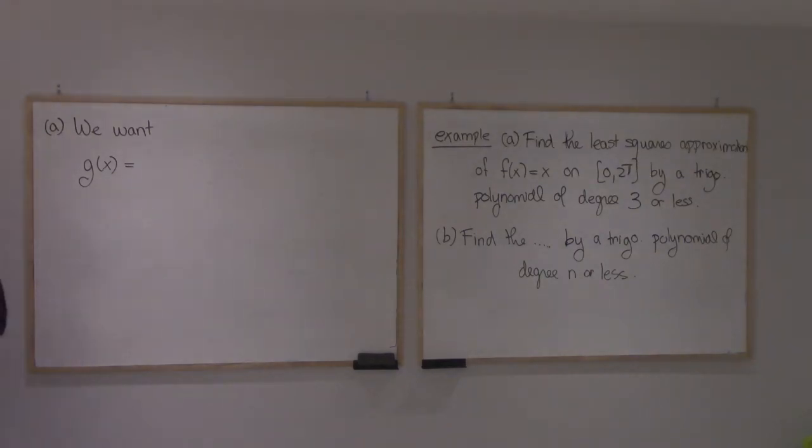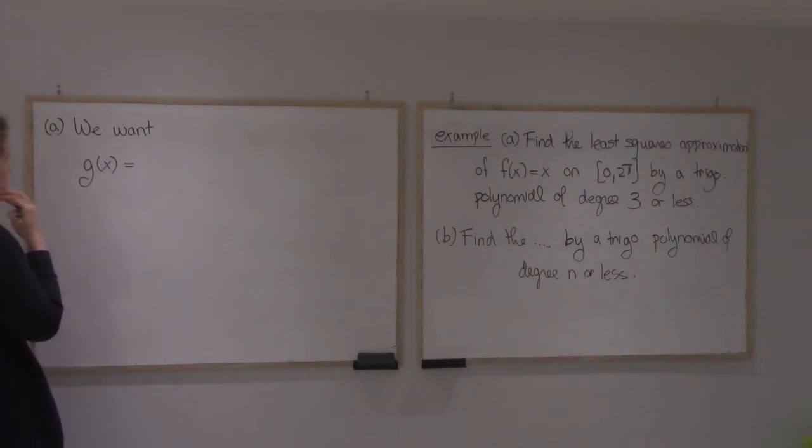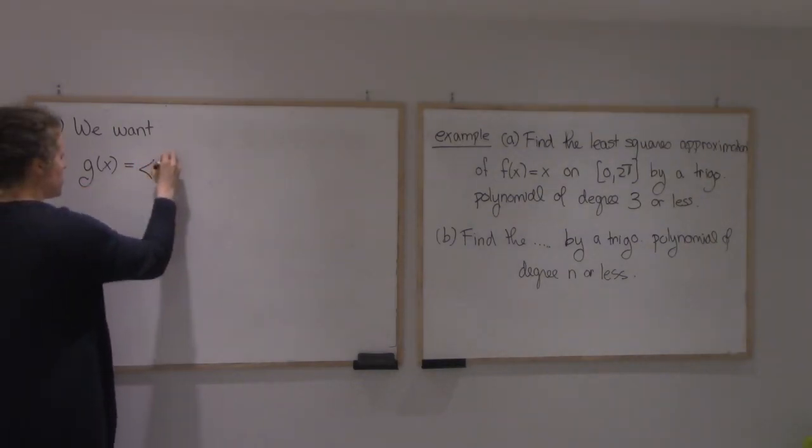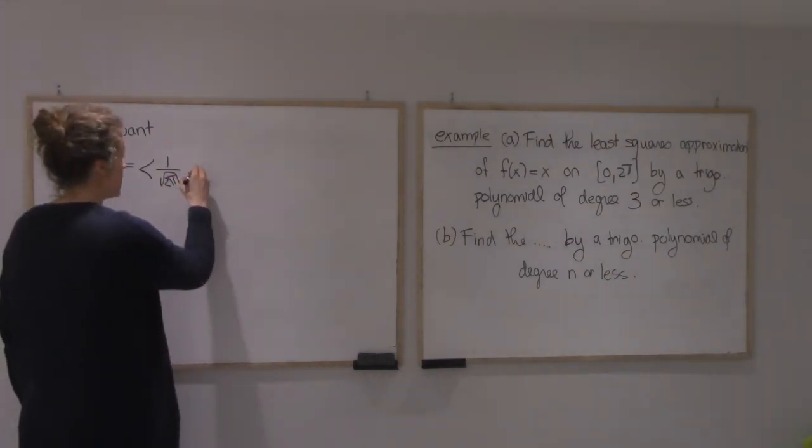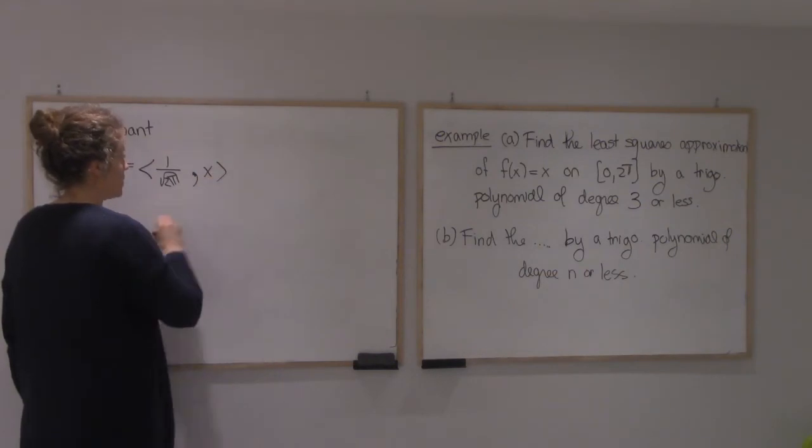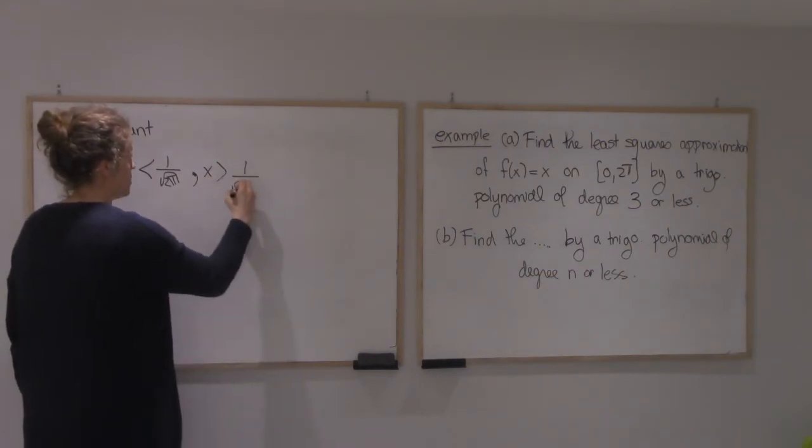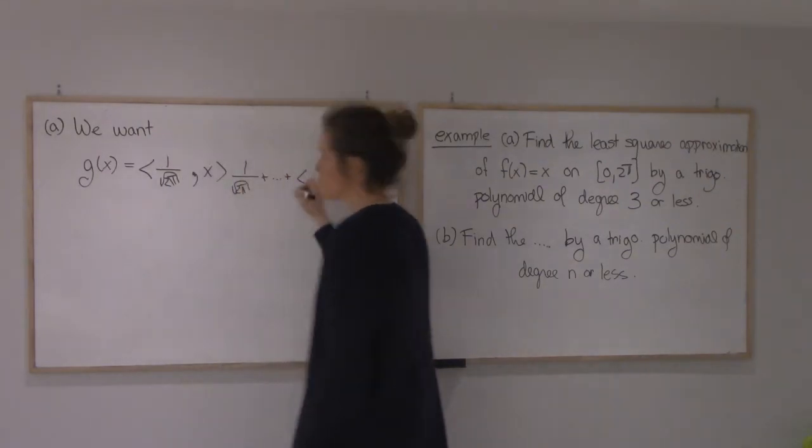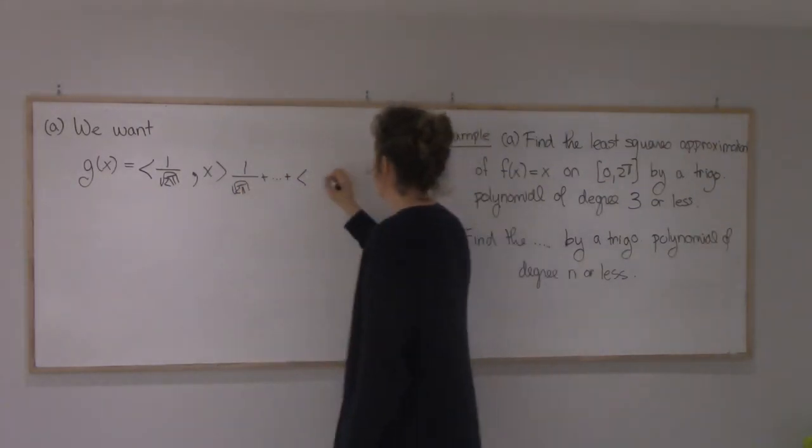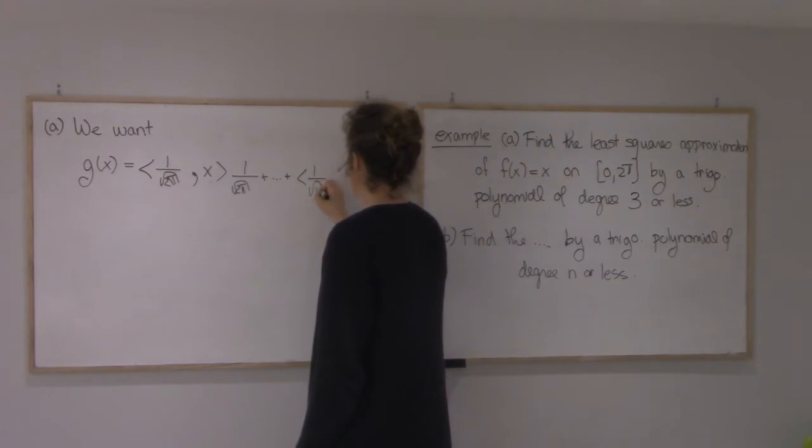So we want g of x to be where we're going to take every element of that orthonormal basis and take a dot product with x, and multiply it by this. And we'll keep doing it. The last one, because we're in degree three or less, will be 1 over root π sine of 3x.